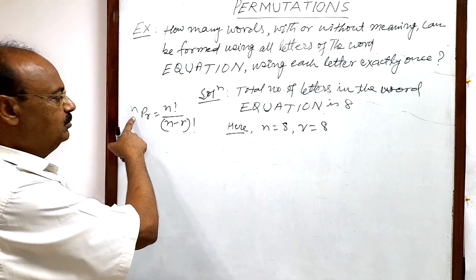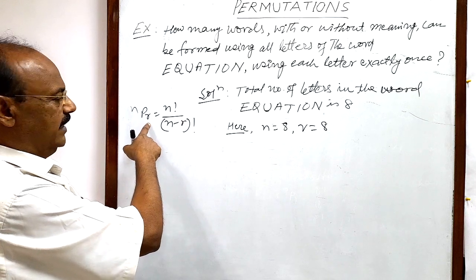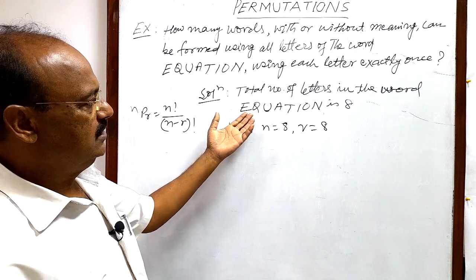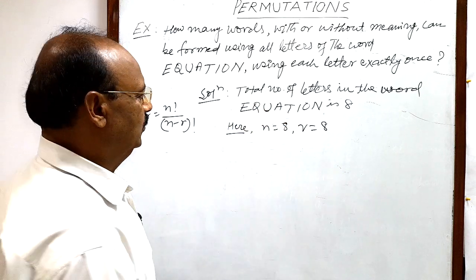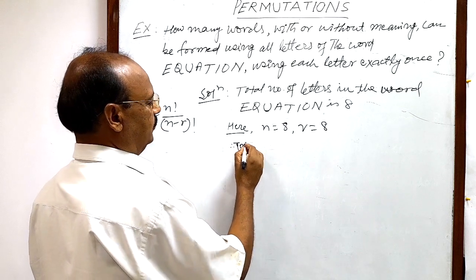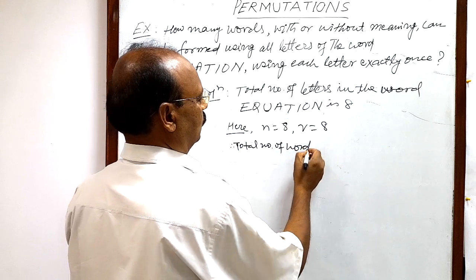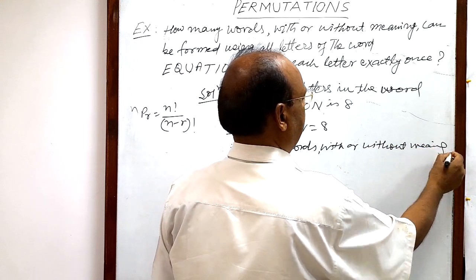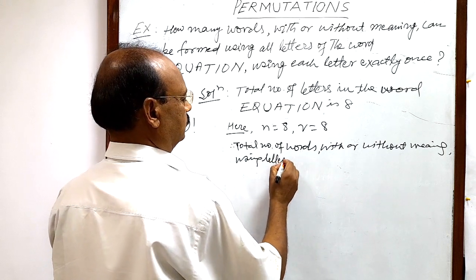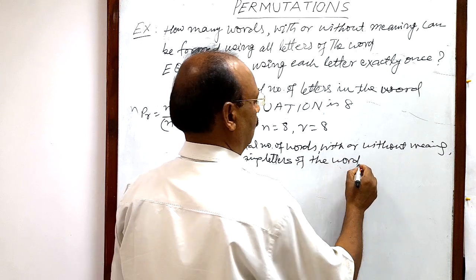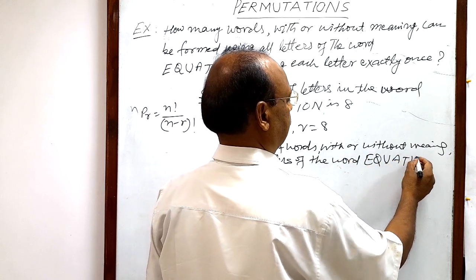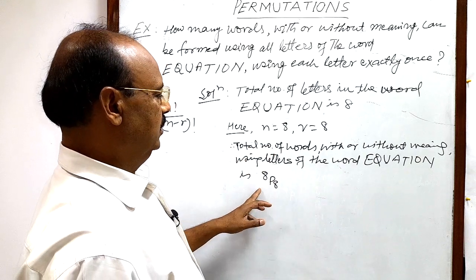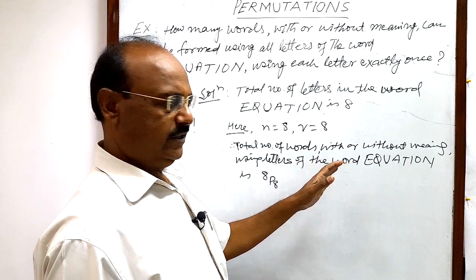In the formula nPr, n indicates the total number of objects and r indicates the number of objects taken at a time. So all the letters have to be taken at a time to form words using the letters available in the word EQUATION. Therefore, the total number of words with or without meaning using the letters of the word EQUATION is 8P8, where n equals 8 and r equals 8.